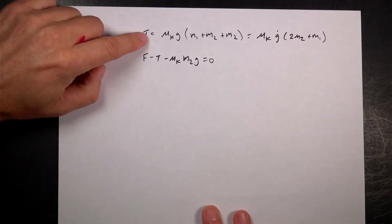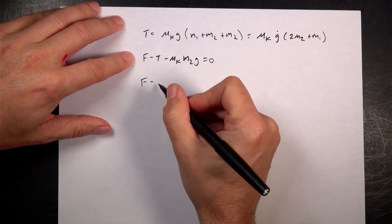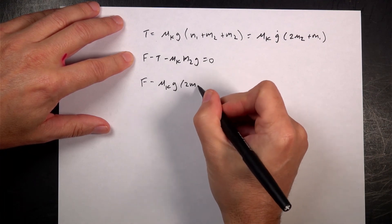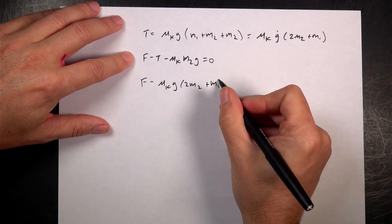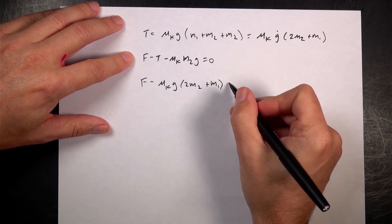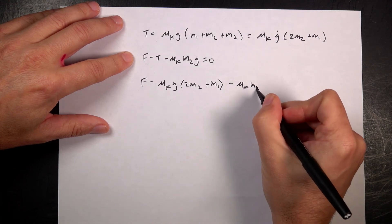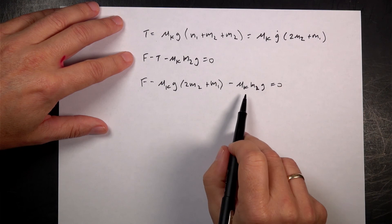So let's go ahead and put this value in for T and I get F minus mu K G (2M2 + M1) minus mu K M2G equals 0. And I want to solve for M2, right?